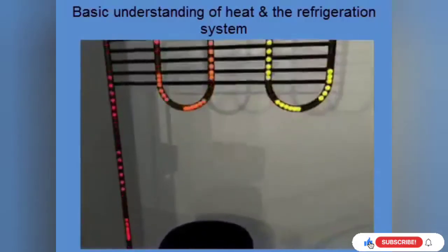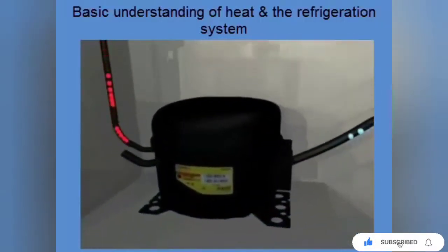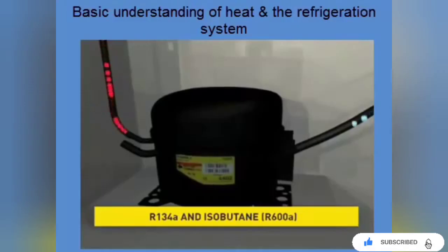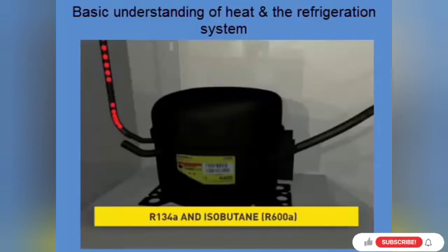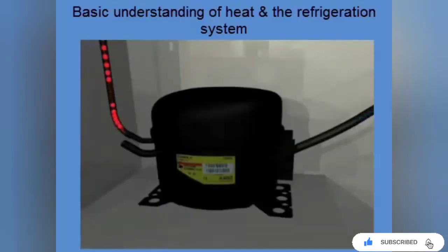Two refrigerants are used mainly in household cooling appliances: the synthetic R134A and the natural isobutane, also referred to as R600A. In Europe, isobutane has become the widely used refrigerant over the last 10 years due to its favorable environmental properties. The compressor label always indicates which refrigerant is used.